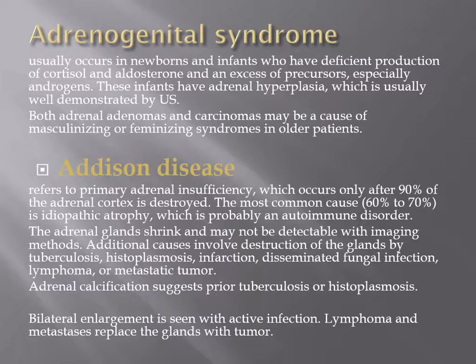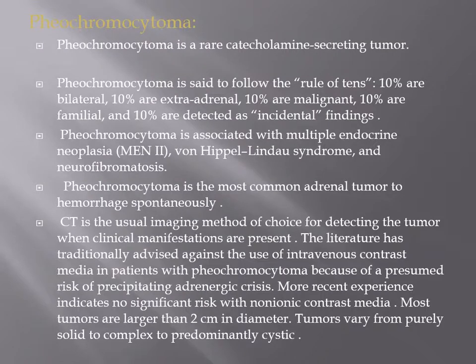The most common cause of Addison's disease is autoimmune, but it can also be caused by tuberculosis or histoplasmosis, in which cases calcification of the adrenal gland is seen. Bilateral enlargement is seen with active infection, lymphoma, or metastasis replacing the gland with tumor.